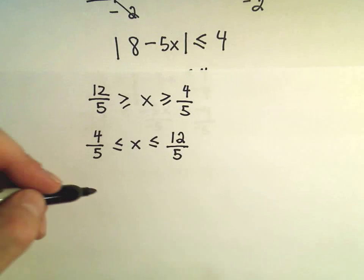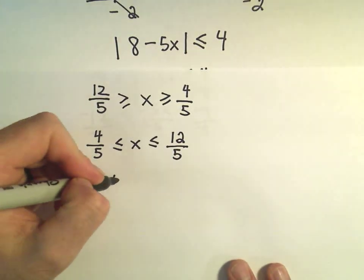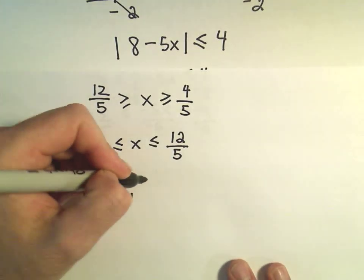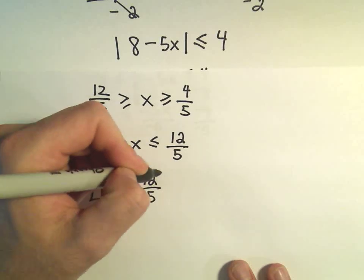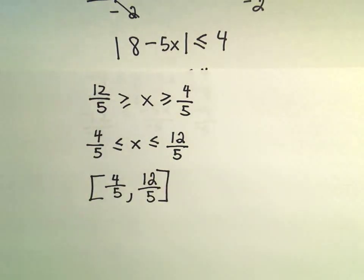And again, if you want to write this using interval notation, we'll use brackets from 4 fifths up to and including 12 fifths.